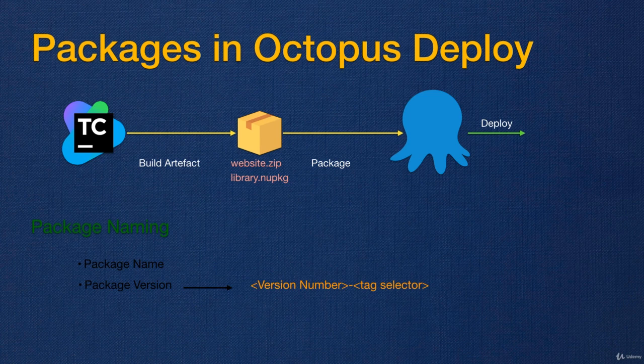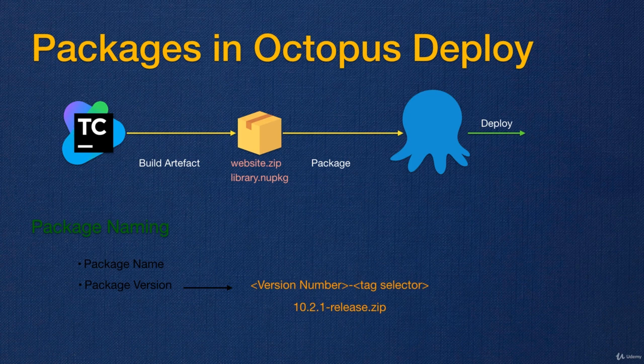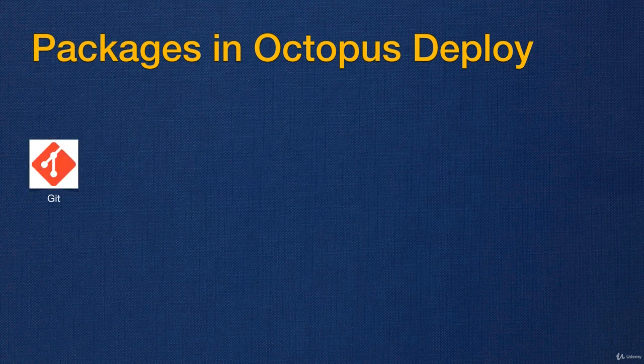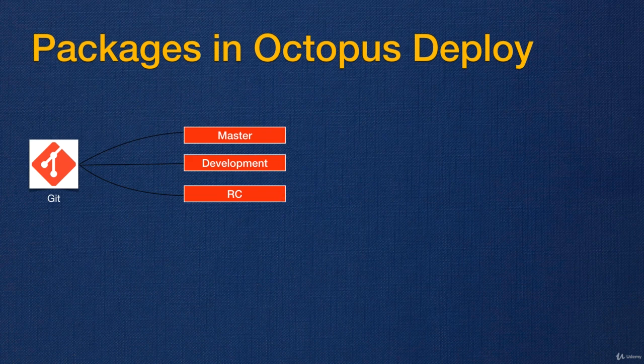This is needed because if we load the same package with the same name but with different tag names, we can decide which package to deploy and exclude the others. For example, the package version can be something like 10.2.1 where that is your build number, then a hyphen, and then 'release' is your tag selector. Let me explain this with some examples, which makes it easier to understand.